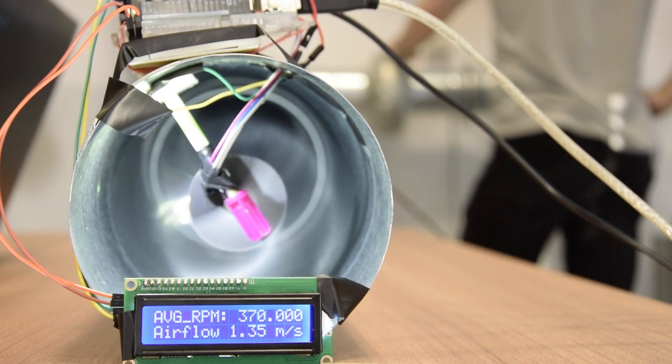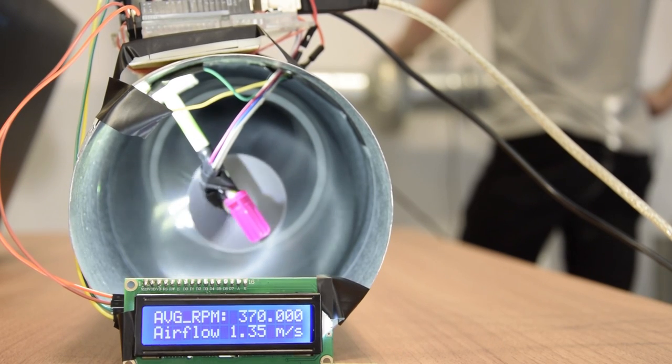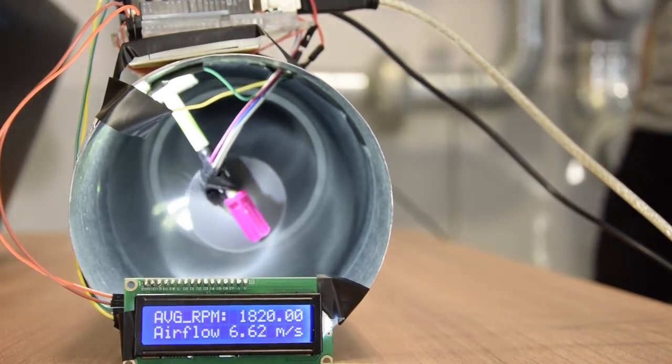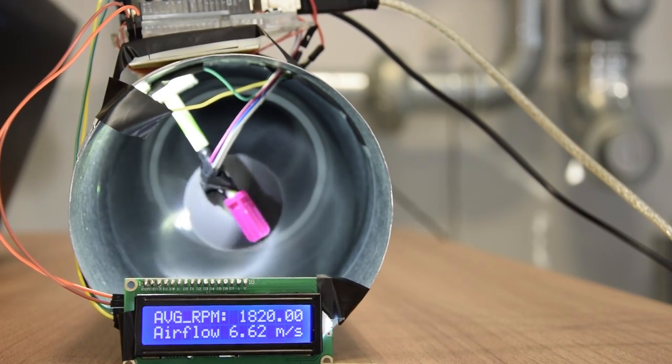Welcome to the first episode of the series in which I create makeshift models of different HVAC airflow devices with cheapest possible components. In this episode I'm building a mechanical fan anemometer.